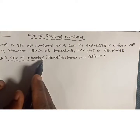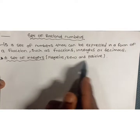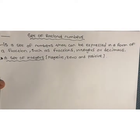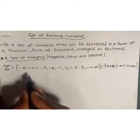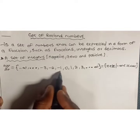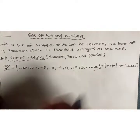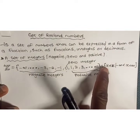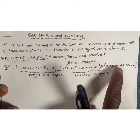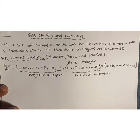A set of integers is a set consisting of negative integers, zero, and positive integers. The set of integers is denoted by Z, and is divided into negative integers, zero, and positive integers. The set of integers is defined by x, an element of integers, such that x is between negative infinity and positive infinity.